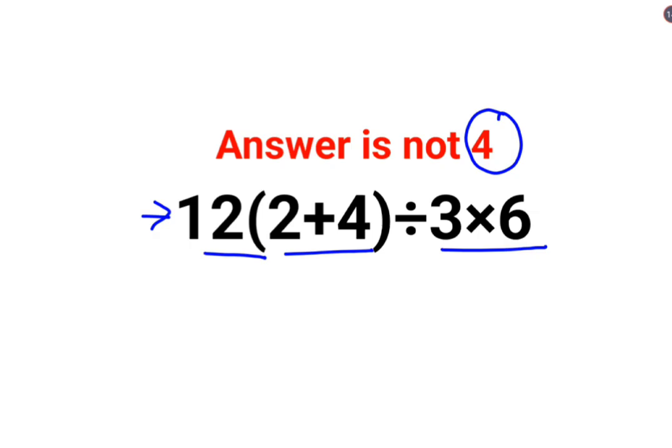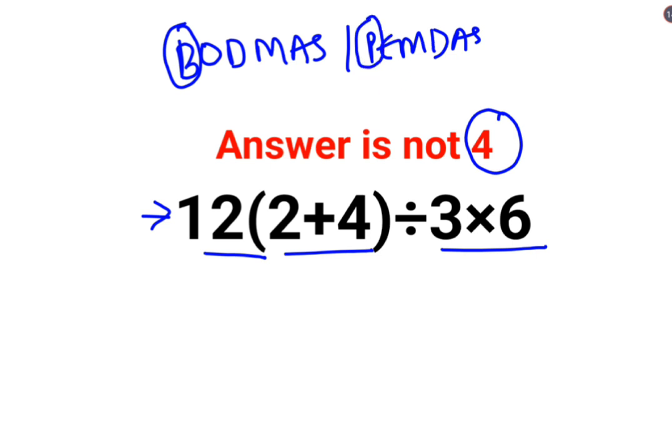Please understand while solving these kind of questions you will either follow BODMAS or PEMDAS. The thing with both of them is that we need to first figure out the brackets or the parentheses. So we will do this bracket first which is 2 plus 4 which is getting you 6.